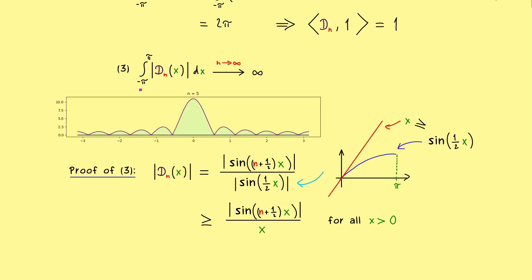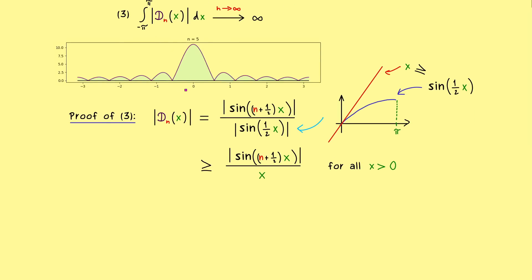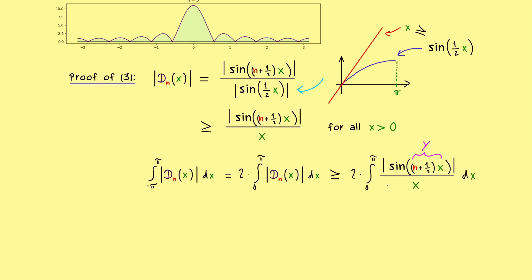So now we only have one sine function in the integration, and we can make it even simpler by substituting this one. So let's call it y, and let's do the substitution for the whole integral. So first, the boundaries will change to 0 and (n + 1/2) times π. Moreover, in the numerator we just have sine of y, and in the denominator we just have y, because the factor cancels with the factor of the differential.